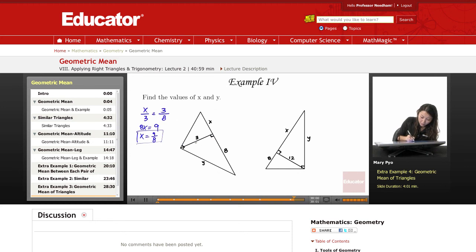So then a squared, leg squared, plus the other leg squared is equal to the hypotenuse squared. So 3 squared plus 8 squared equals y squared. 3 squared is 9 plus 64 is equal to y squared. 73 equals y squared. y equals square root of 73.